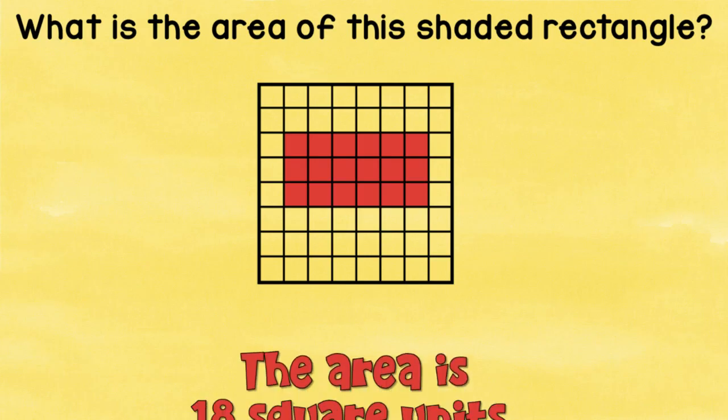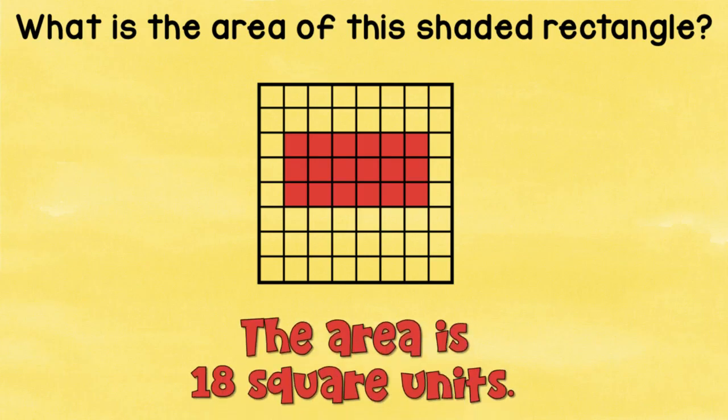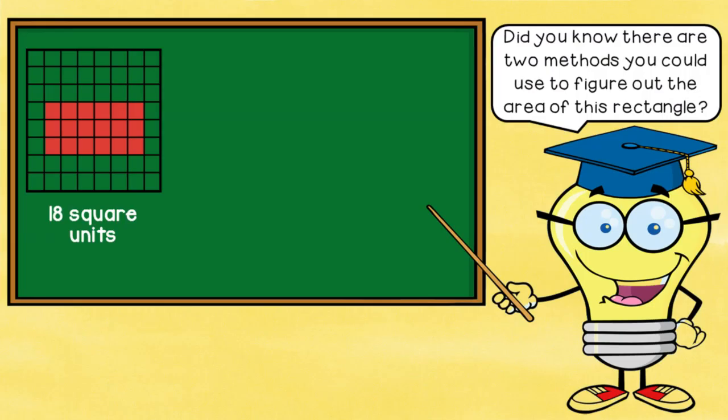Now, if you remember, she talked to you about counting the number of square units. So to figure out what the area of this shaded rectangle is, you could simply count how many squares are inside of it. And if you counted each of those, you would find that there were 18 square units, remembering that you have to use the term square, whether it's units, centimeters, inches, and so on.